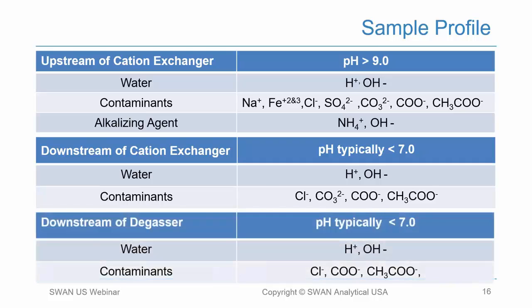If you are using degas cation conductivity downstream of the degasser, what you have remaining is water, chlorides, formates, and acetates — the carbonates and CO2 are removed.